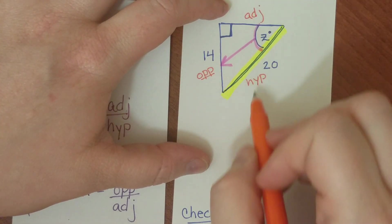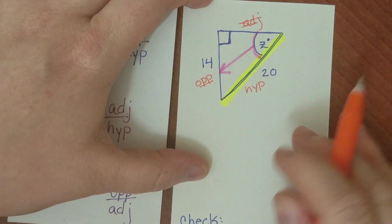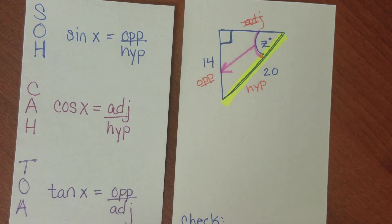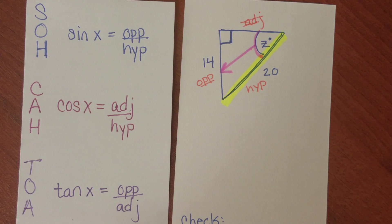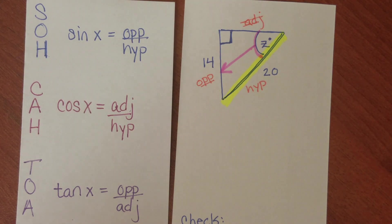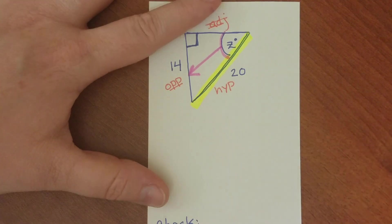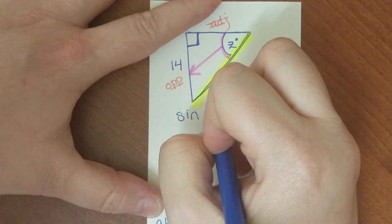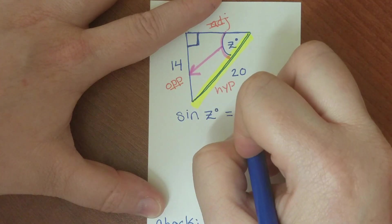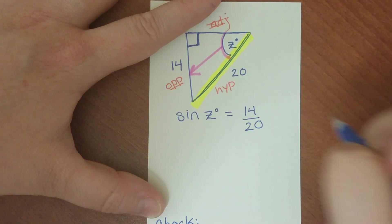Because nothing is given for the adjacent side, I'm not going to be using it for this problem. I have to ask myself: which one of my three trig functions relates the opposite side of an angle to its hypotenuse? Looking at our options, you can see that's going to be the sine function. So we're going to use the sine function in this example. That means that the sine of Z is equal to 14 over 20.